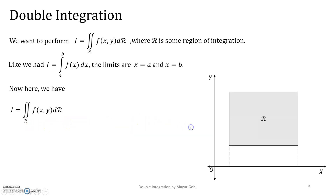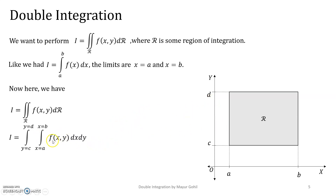Consider this diagram in which we have a simple rectangle as the region of integration. The shadow of this region on the x-axis is the interval a to b, and its shadow on the y-axis is the interval c to d. So if we write the integral with differential dx dy, then in the inner integral we write the limits of x, and in the outer integral we write the limits of y.